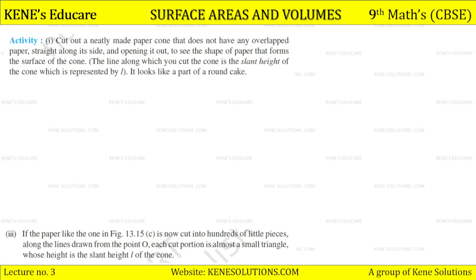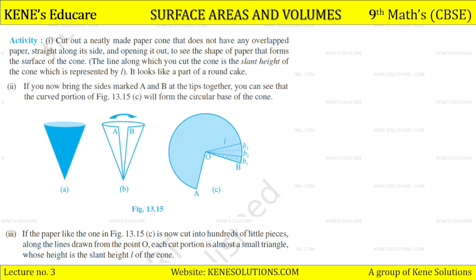Activity: cut out a neatly made paper cone that does not have any overlap, cut straight along its side and open it out to see the shape of paper that forms the surface of the cone. So we see a diagram like this — a cone is cut out and it forms a sector shape, something like a part of a round cake. If you cut this into hundreds of little pieces along lines drawn from point O, each cut portion is almost a small triangle whose height is the slant height L of the cone.